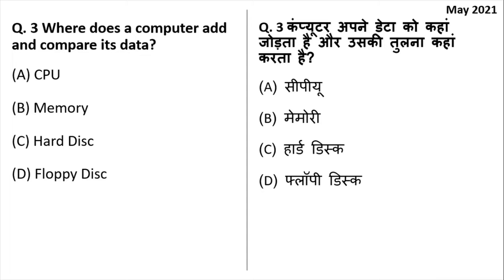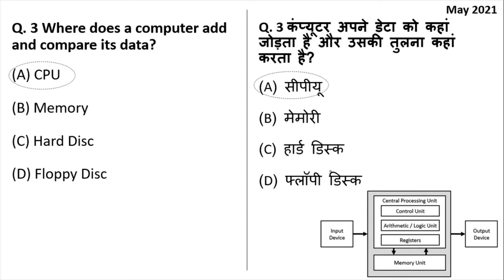Where does the computer add and compare its data? A computer performs comparison of data in the CPU. The CPU consists of three components: the control unit, the ALU (arithmetic logic unit), and the memory unit. This comparison is done by the ALU, which is inside the CPU. Among the four options, the right answer is option A — comparison of data is done by the CPU.